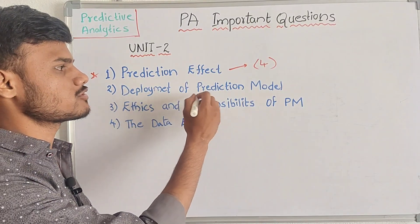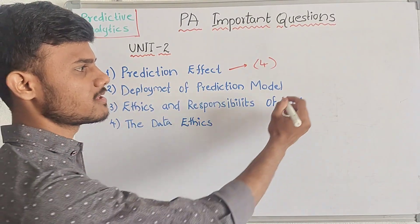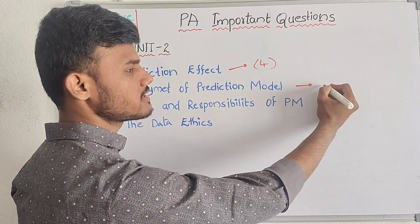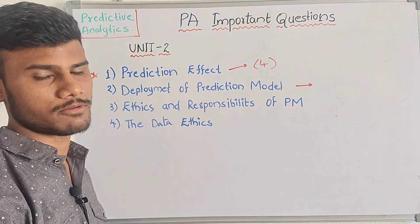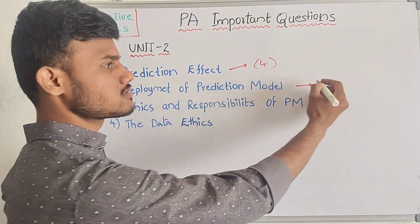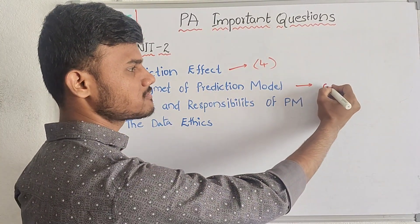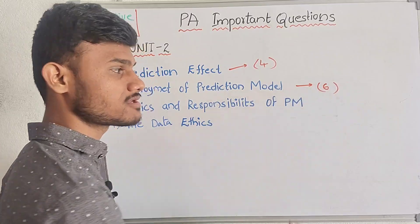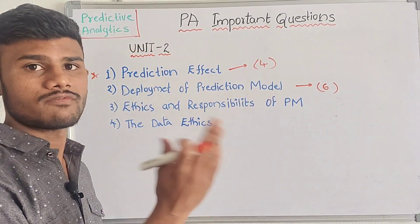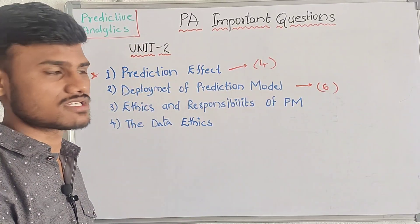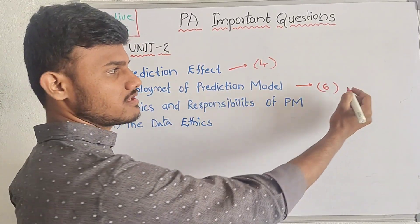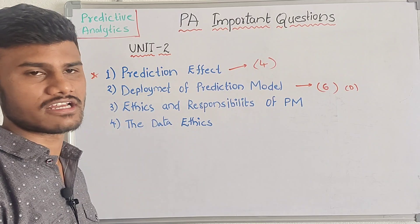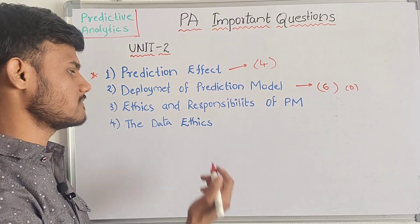Next is deployment of prediction model. This prediction model has step-by-step deployment — there are six steps. You have to draw it well and explain it well, one by one.